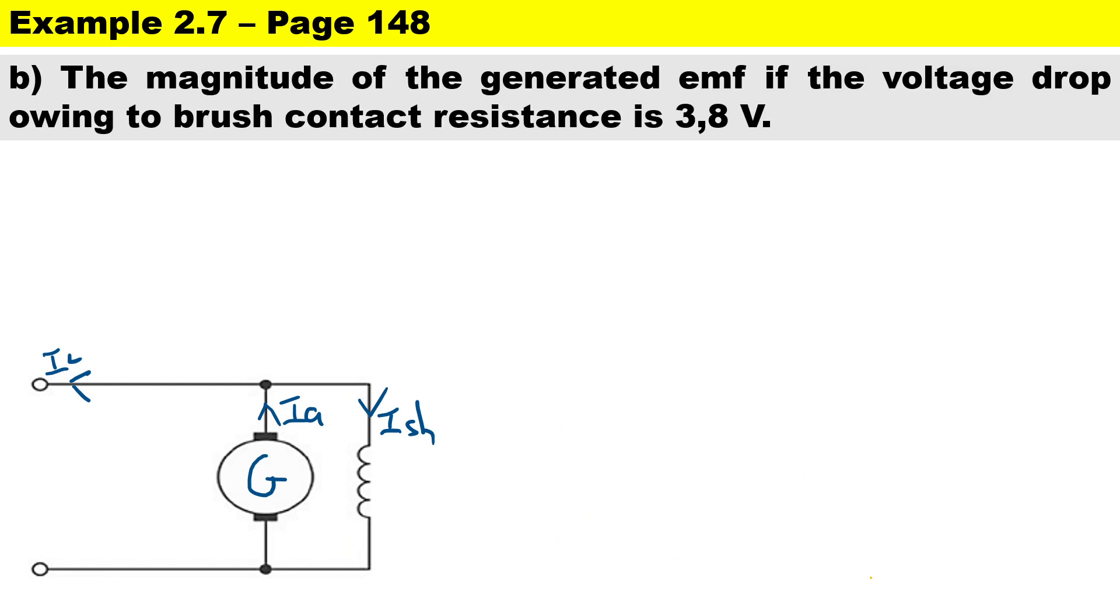Therefore the armature current will be 50 plus 2.5, so therefore that gives us 52.5 amps.